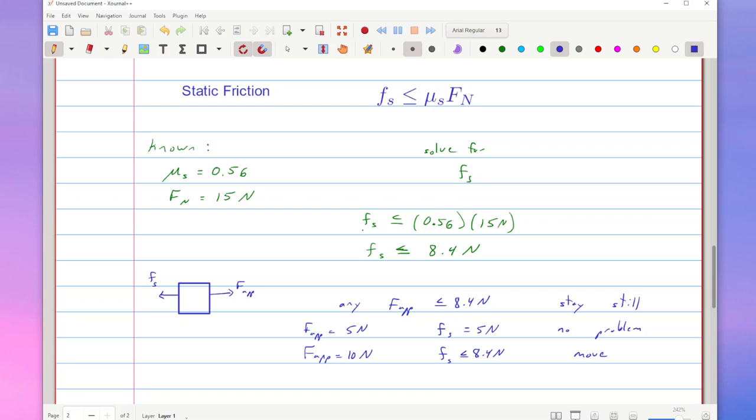So a lot of times what they end up having you find is this maximum value. So this is really that the static friction maximum value is equal to mu s fn. And in any particular problem, you'll have to look to figure out whether the static friction is more or less than that maximum. If it's less, it stays static. If it tries to be more, it's not going to stay still.